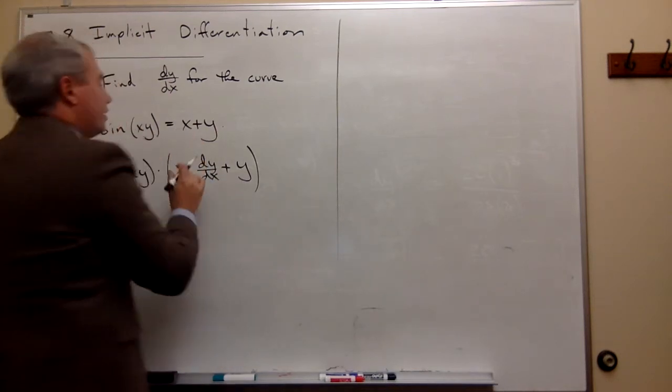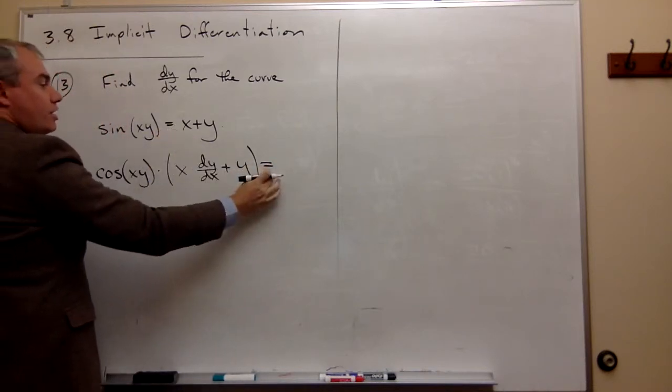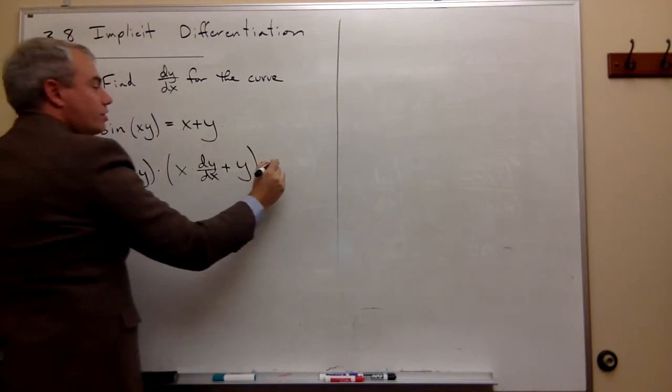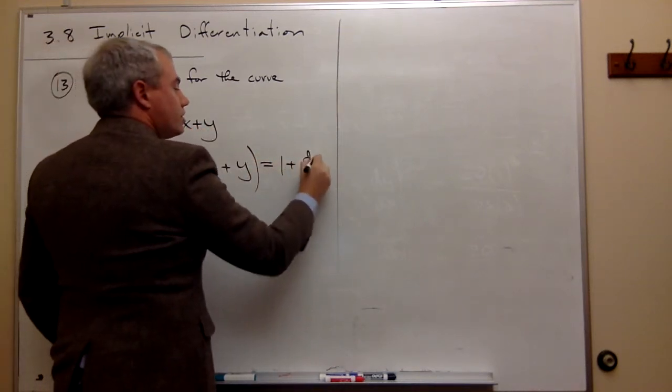Then we need to add on what's on the other side of the equation. So this should equal the derivative of x, which is 1, plus the derivative of y, which is dy/dx.